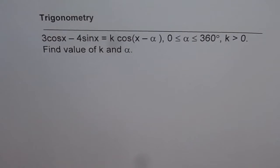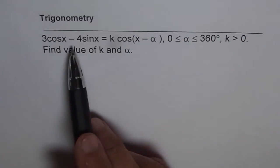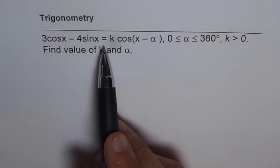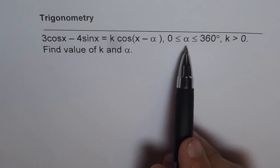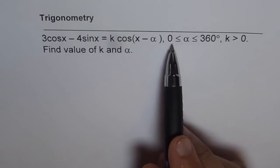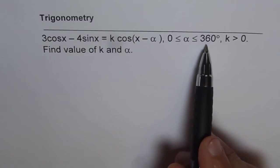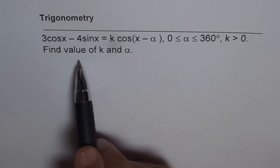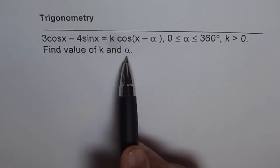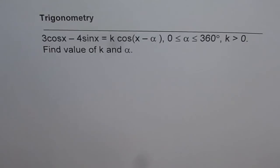Now let us analyze a very important trigonometric equation which represents simple harmonic motion. The equation is 3 cosine x minus 4 sine x equals to k times cos of x minus alpha, where alpha is an angle between 0 and 360 degrees and k is greater than 0. You need to find the value of k and alpha.